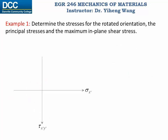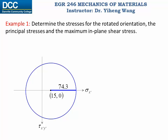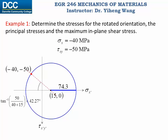On this coordinate system we draw a circle with center at 15, 0, and radius of 74.3. The original sigma x is negative 40 and tau xy is negative 50, and using these two as coordinates we find this point on the circle. This angle can be determined through trigonometry to be 42.27 degrees. For the new orientation, theta equals to negative 15 degrees. Therefore we rotate this line clockwise by 30 degrees — clockwise rotation corresponds to negative angle. Now we need to find the coordinates of this point, so let's use a reference right triangle.